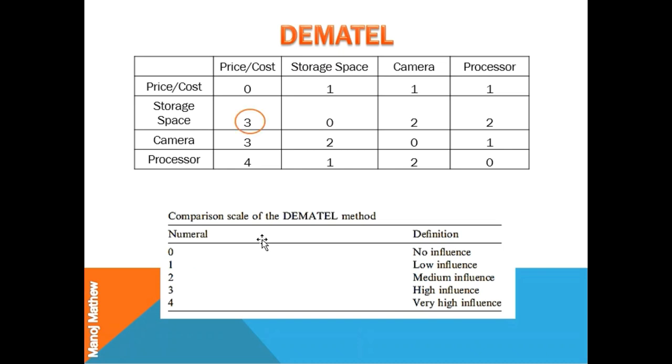For example, the value of this cell represents the influence of storage space over price. If the storage space in the mobile is increased, the price also increases. So storage space has a high influence over price. You can see that in the comparison scale, for high influence, a value of 3 is assigned. So this cell will be assigned a value of 3.